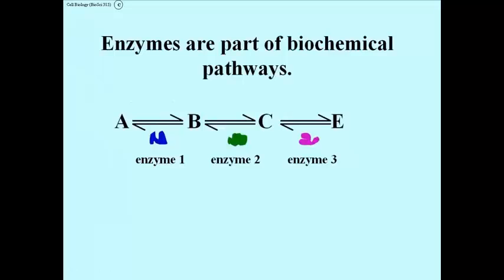Enzymes don't act in isolation. Biological catalysts are not isolated from other reactions in the cell. Typically they're part of biochemical pathways, such as the one shown here, where A is converted to B by enzyme 1, B to C by enzyme 2, C to E by enzyme 3, and so on.